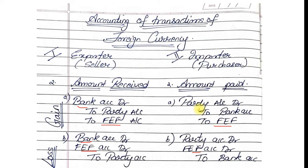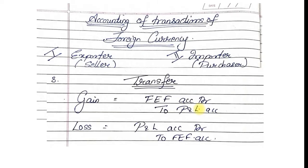The third is a common transfer entry for both importer and exporter, always at the end of the year on 31st March. If there is a gain — FEF was on the credit side — when you transfer it becomes debit side, so it will be FEF to P&L. If there is a loss — FEF was on the debit side — when you transfer it becomes credit side, so it will be P&L to FEF. This entry is the same whether you are an importer or an exporter.